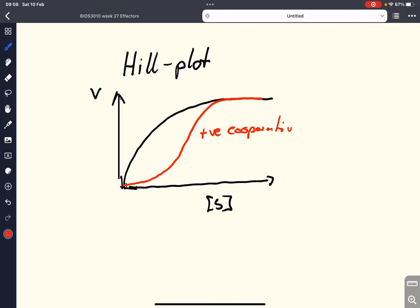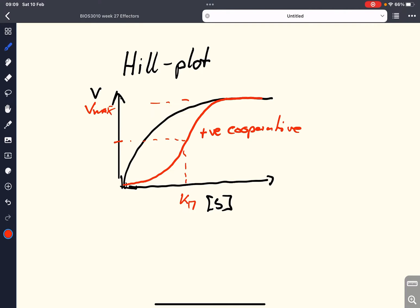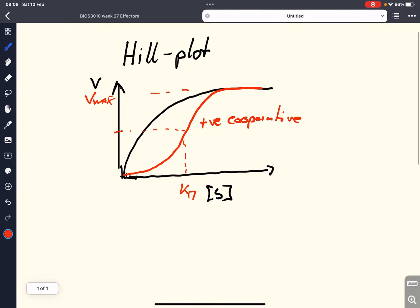And of course, this also has a Vmax, the sigmoidal curve, and we can also define half of Vmax as our Km. Very often this is also denoted as K0.5 because that's the halfway point. But I want to be consistent and I want to call it Km in this case. So how can we mathematically describe this curve?